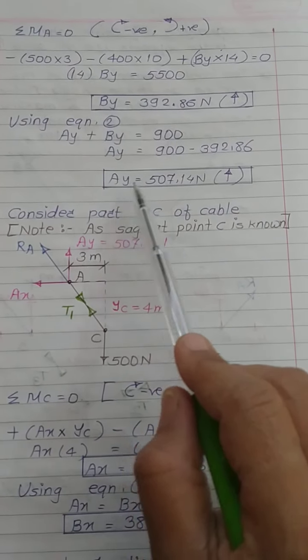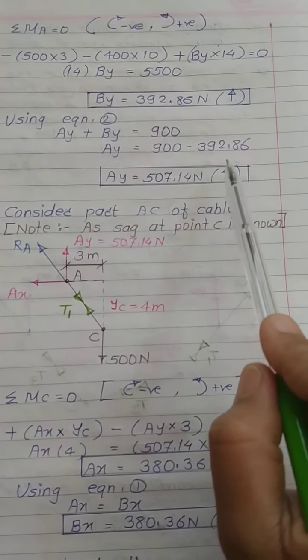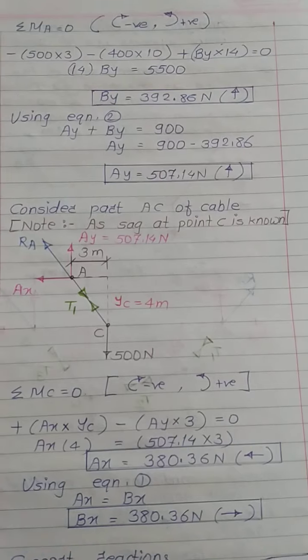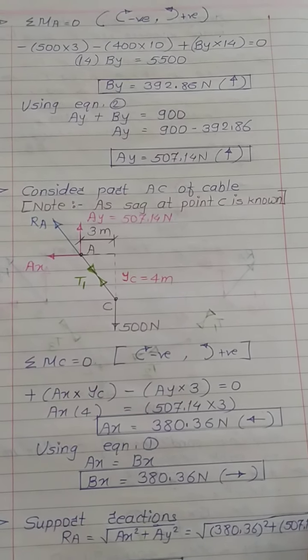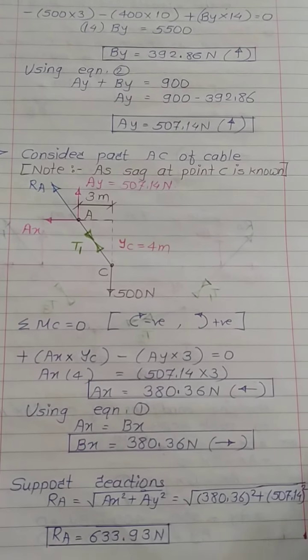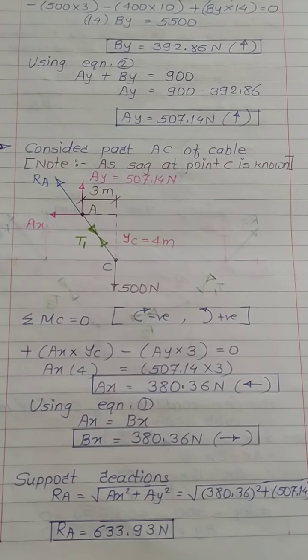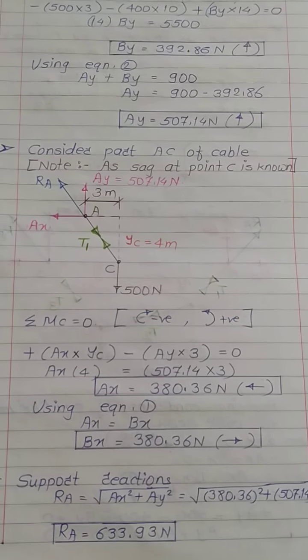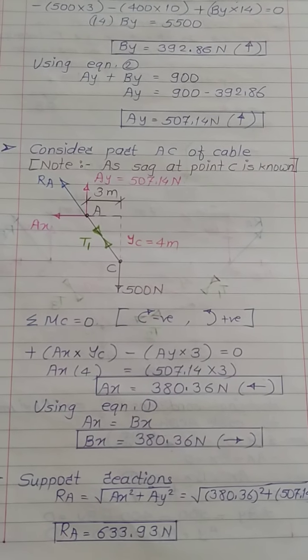Using equation two, Ay + By = 900, and substituting the known value of By, we can solve for Ay, which also acts vertically upward.